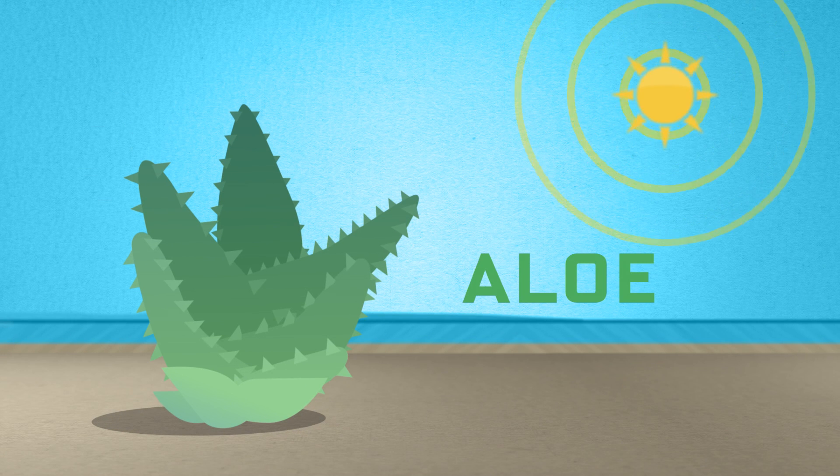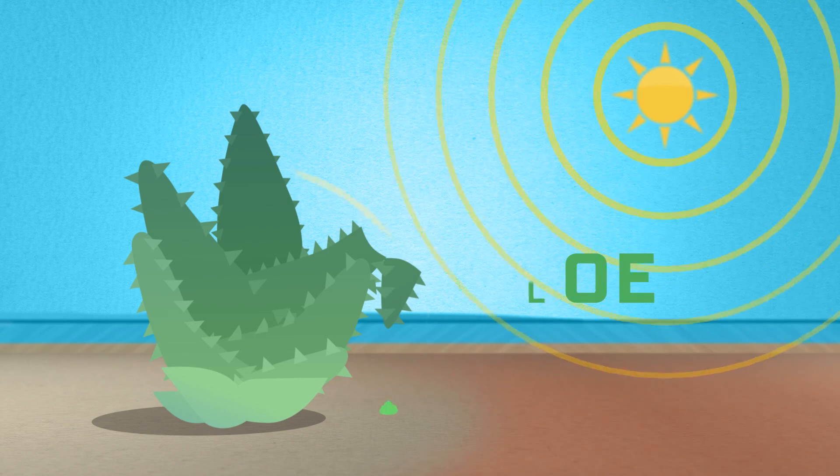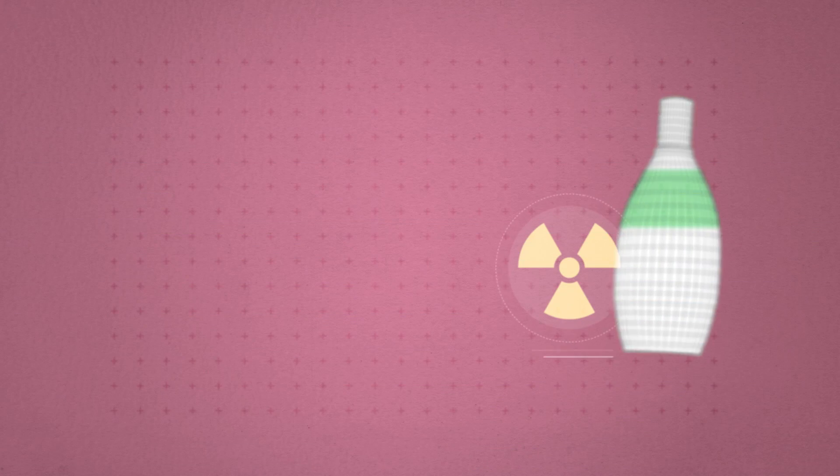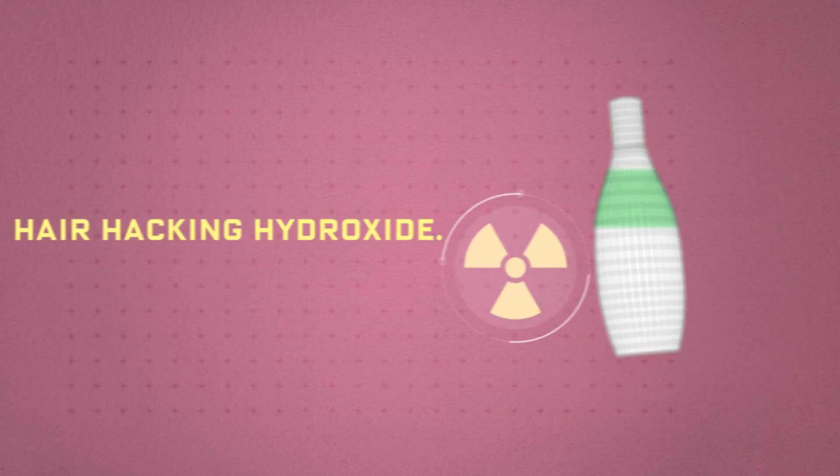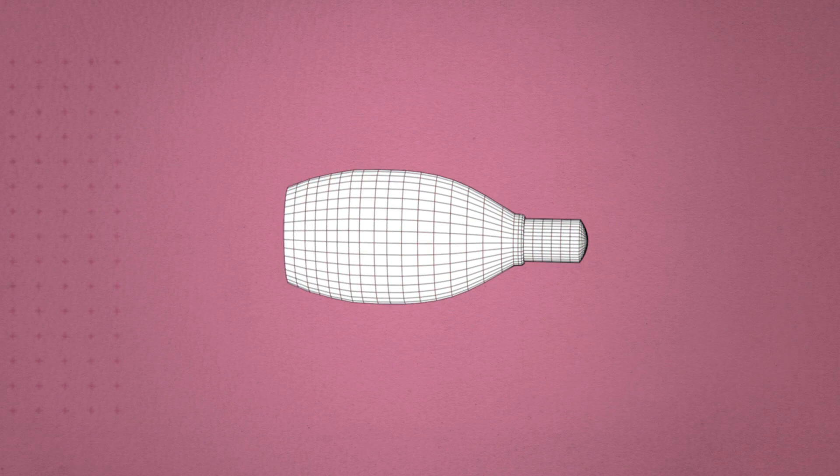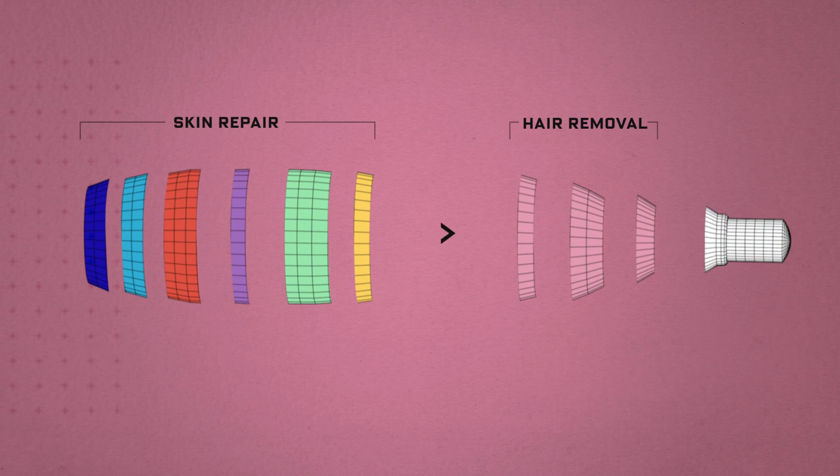Finally, there's Aloe Barbadensis. It's great for sunburns and the chemical damage from that hair hacking hydroxide. Yep, the skin repair agents officially outnumber the hair removal ingredients.